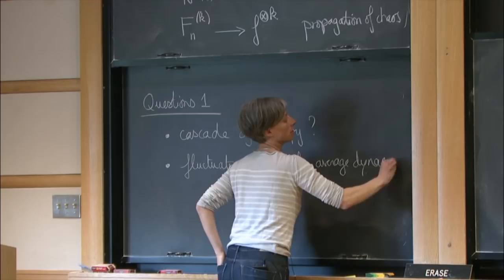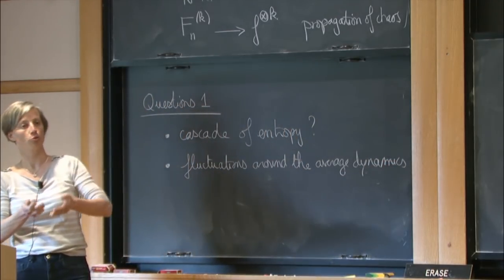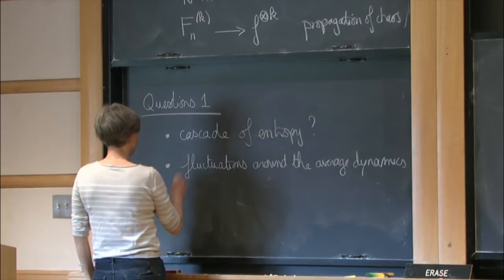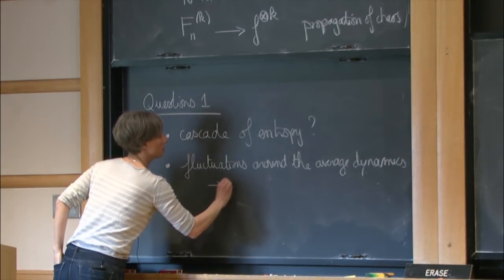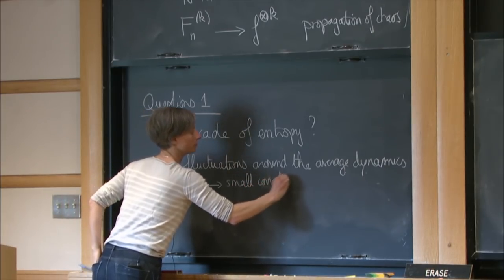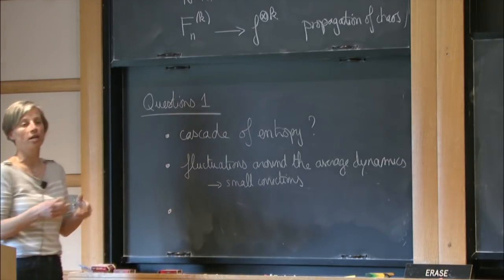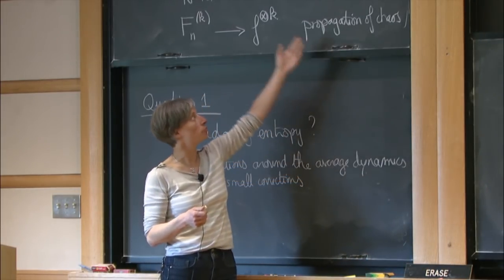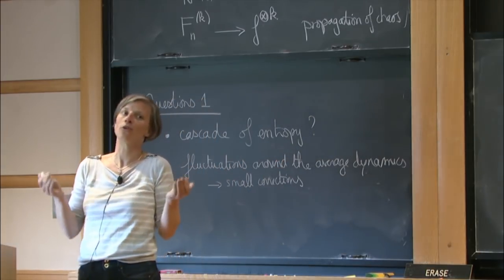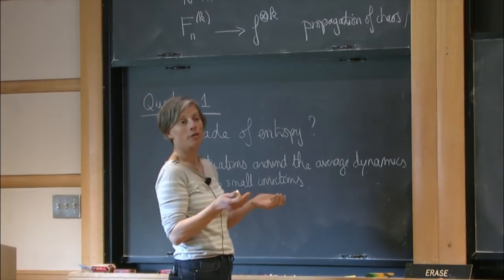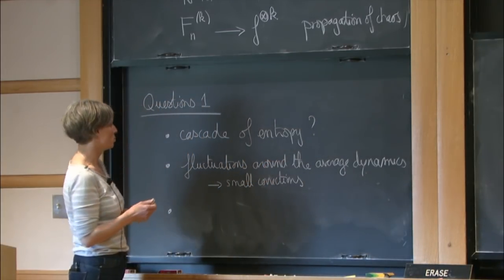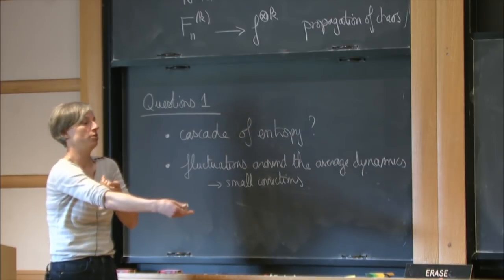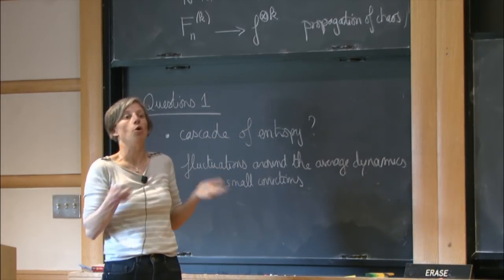So you want to describe fluctuations around the average dynamics. With almost probability one, you will have a dynamics well described by the solution of the Boltzmann equation, but of course this is an average and you have fluctuations around it. To characterize these fluctuations you need to understand a little bit more than just the first approximation. Typically this is what happens with a central limit theorem.